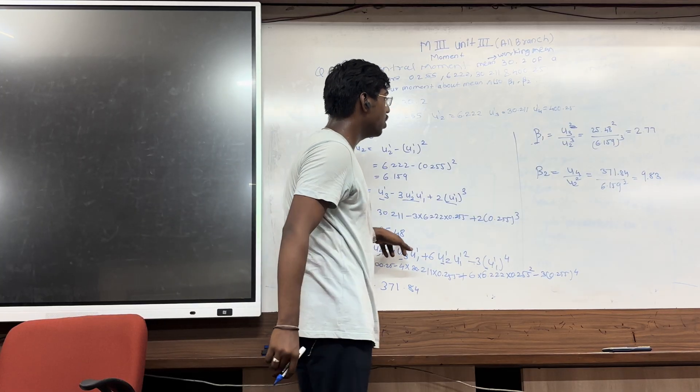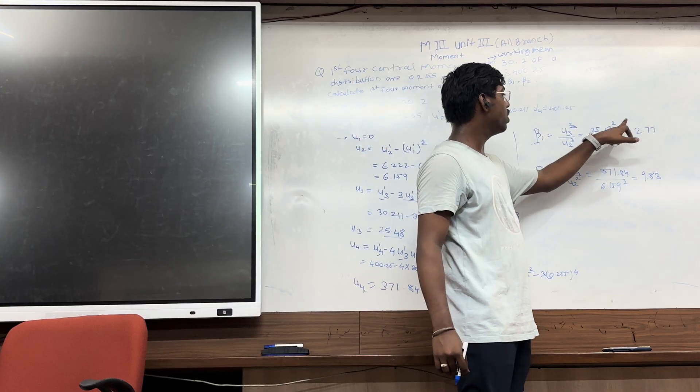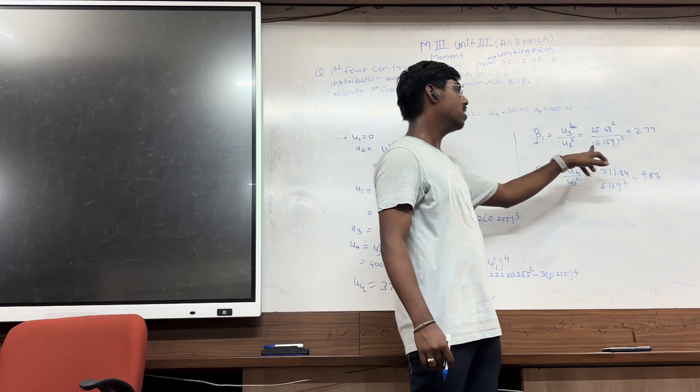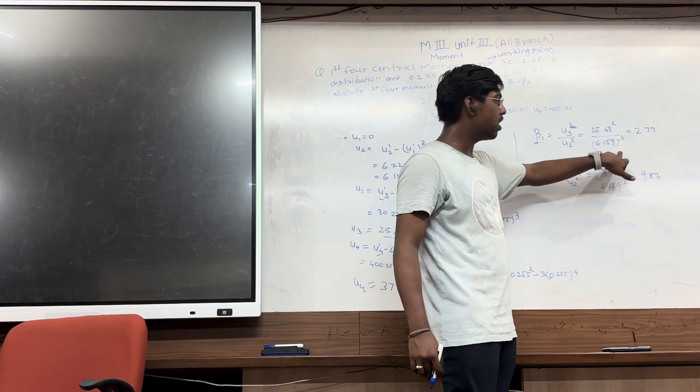The calculated value is mu3 is 25.48, so it is 25.48 bracket square, and mu2 is 6.159, that is 6.159 bracket cube. The answer will be 2.44.